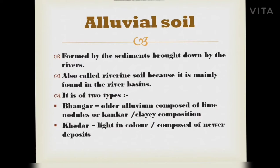First, we will go through alluvial soil. It is formed by the sediments brought down by rivers, and is also called riverine soil because it is mainly found in river basins. It is of two types: Bhangar, which is older alluvium composed of lime materials or kankar (a clay composition), and Khadar, which is light in color and composed of newer deposits.